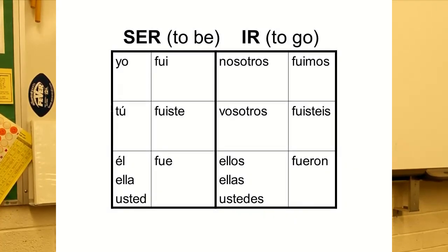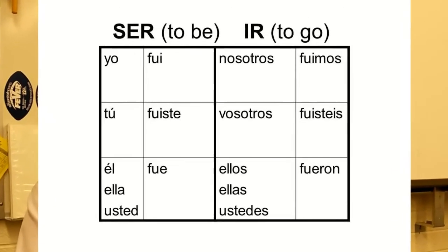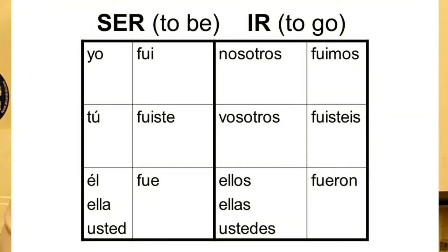I'm going to put the conjugation chart back on the screen while I give a few closing comments. You just have to know these. We're going to practice them and use them so much that they'll start to stick. For now, let's study the chart — fui, fuiste, fue, fuimos, fueron.